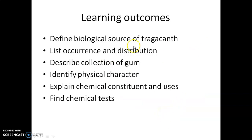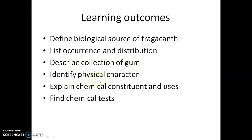The learning outcomes of today's lecture: students will be able to define the biological source of Tragacanth, list its occurrence and distribution, describe the collection of gum, identify its physical characters, explain chemical constituents and uses, and perform chemical tests.